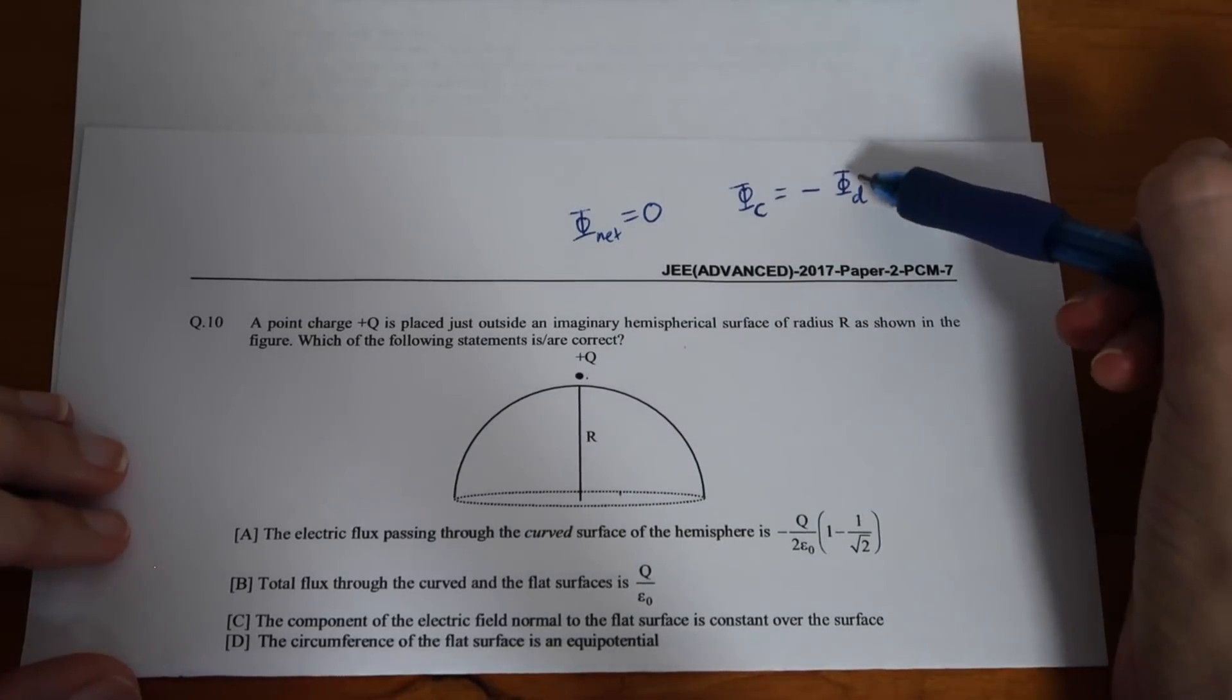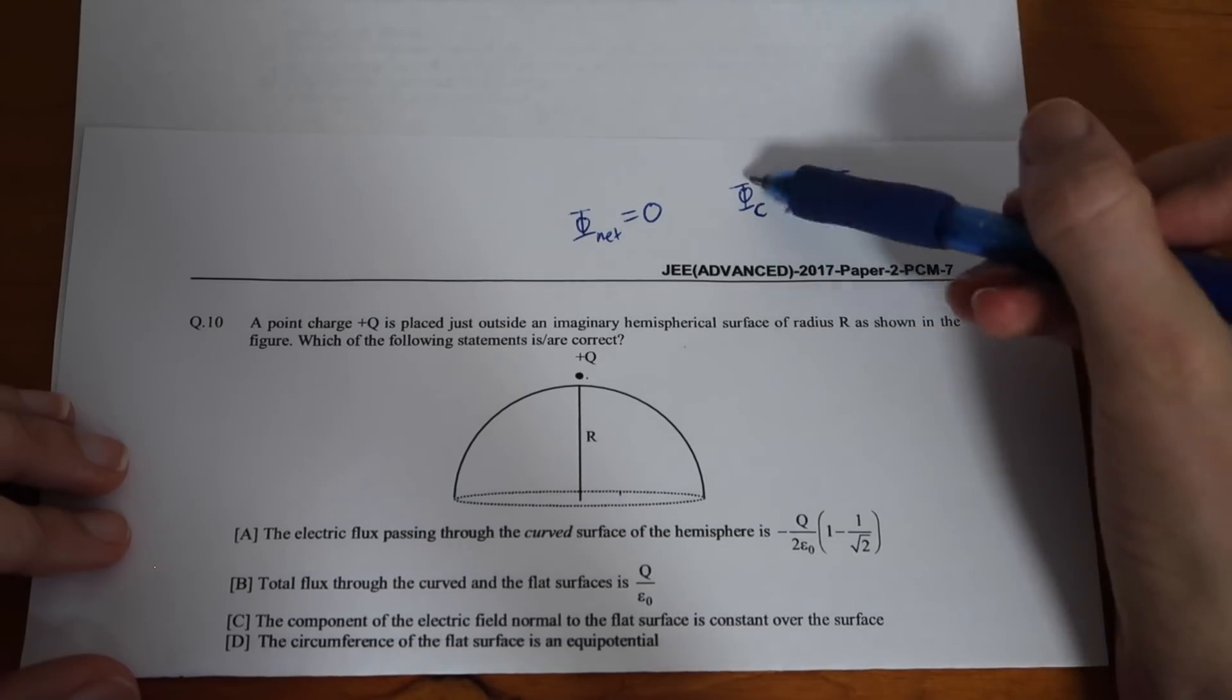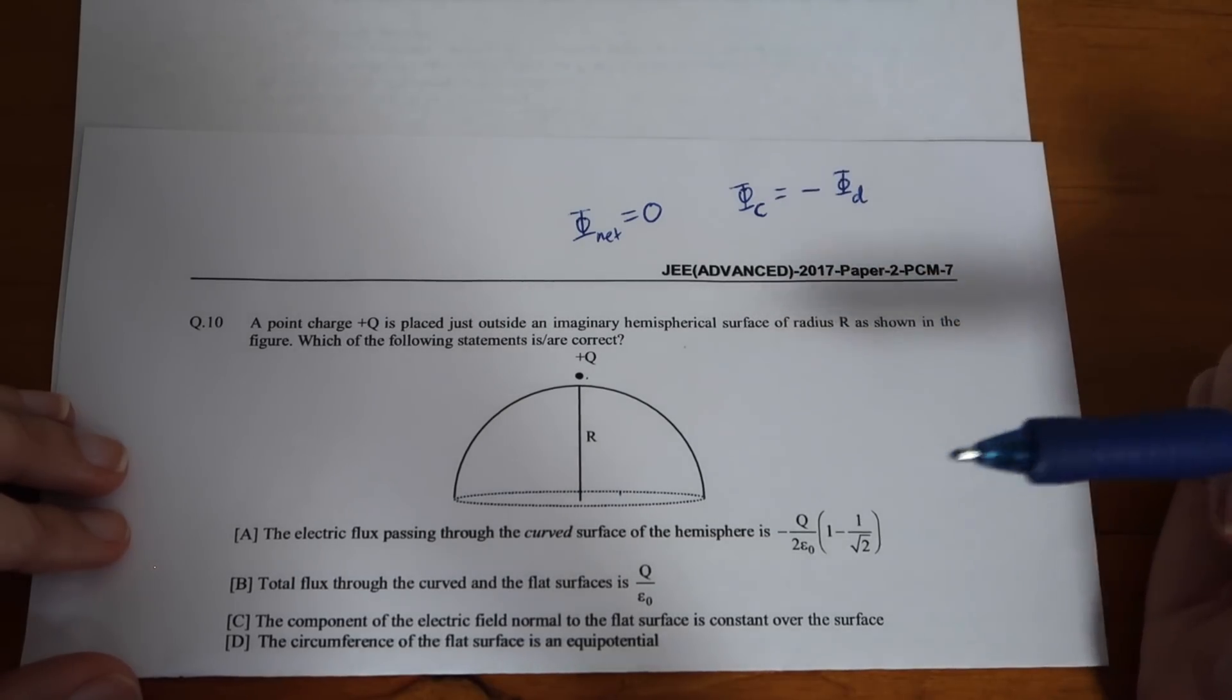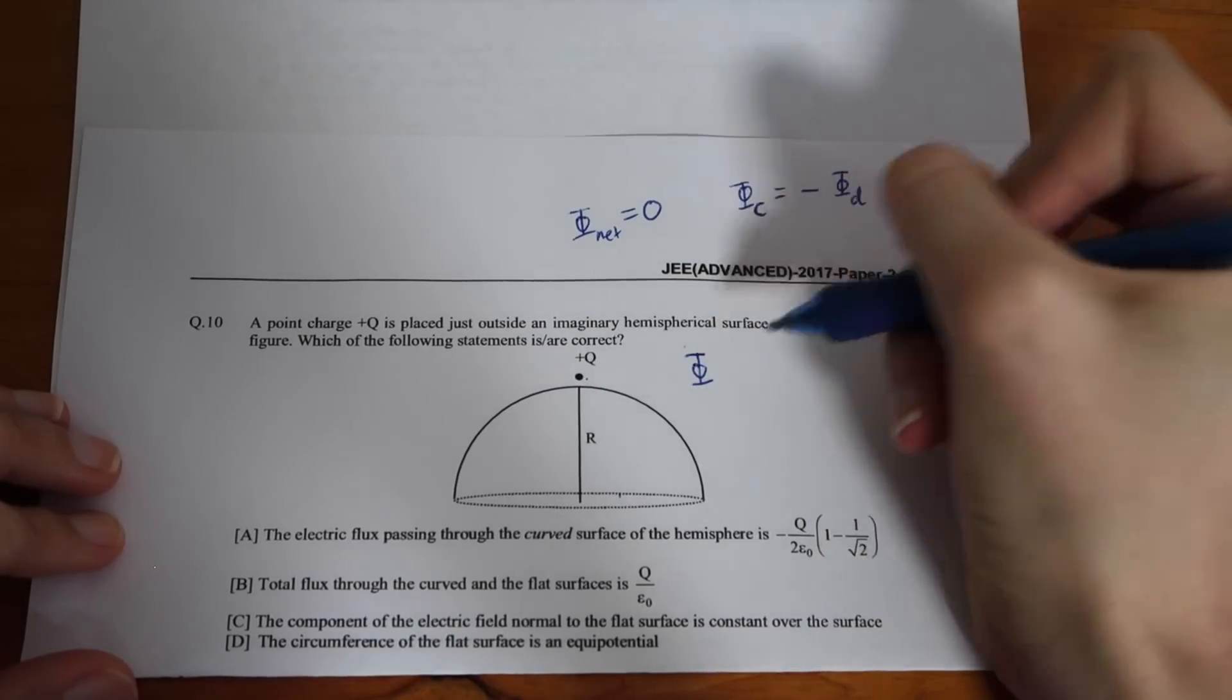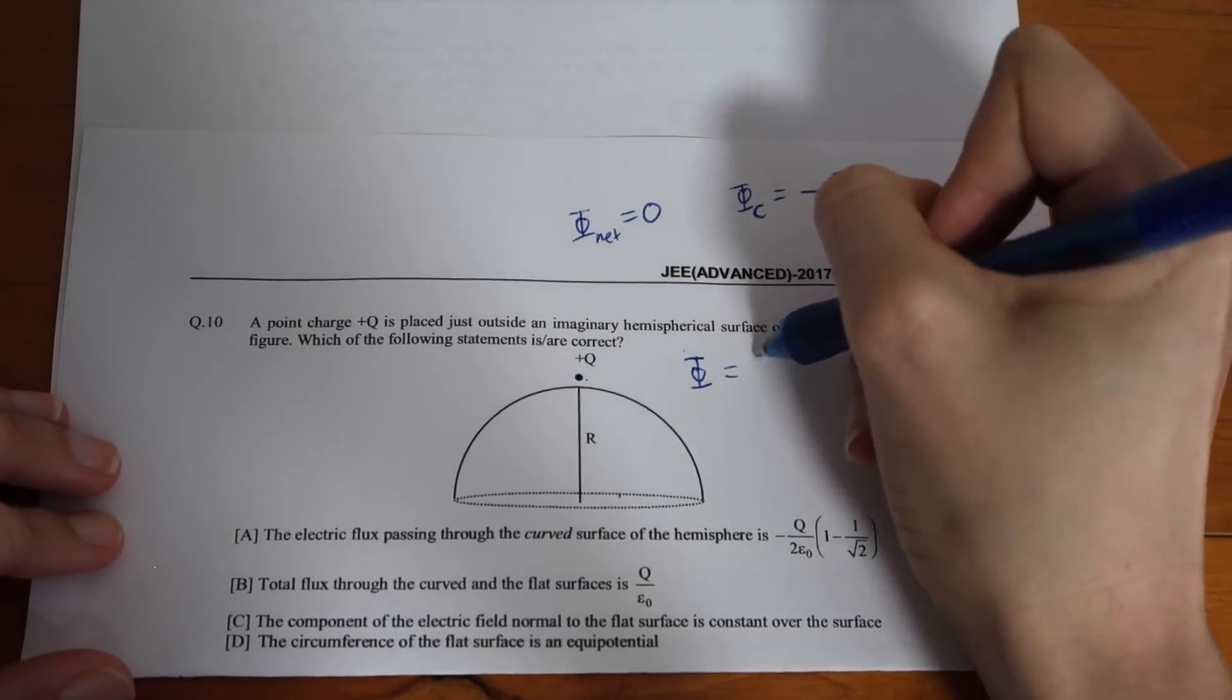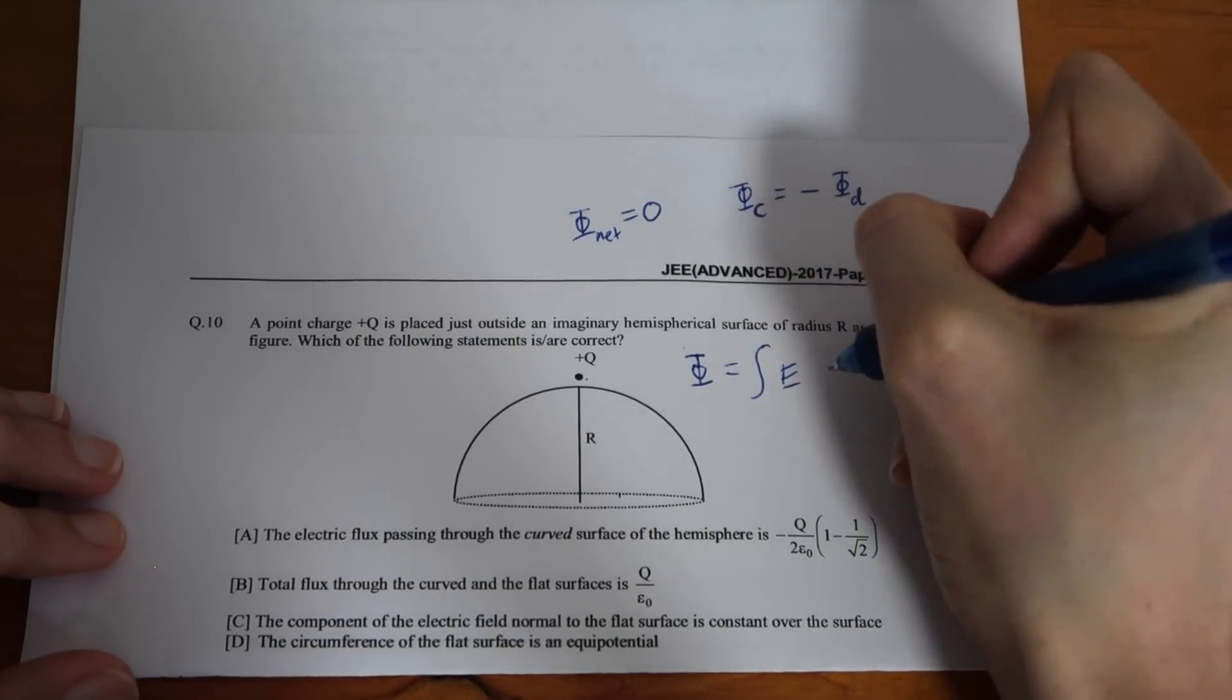That means that we can equate the curved surface flux or anything entering the surface we'll denote that as flux C for curved will be equal to the negative of all the flux that leaves the surface through the disk on the bottom. So, that's flux of the disk. Now, question A is asking us only about the flux through the curved surface. It would be a lot harder to find that though because we'd have to integrate over this hemisphere. What we're going to instead do is find the flux of the disk, take the negative of that value and that should give us the flux of the curved surface.